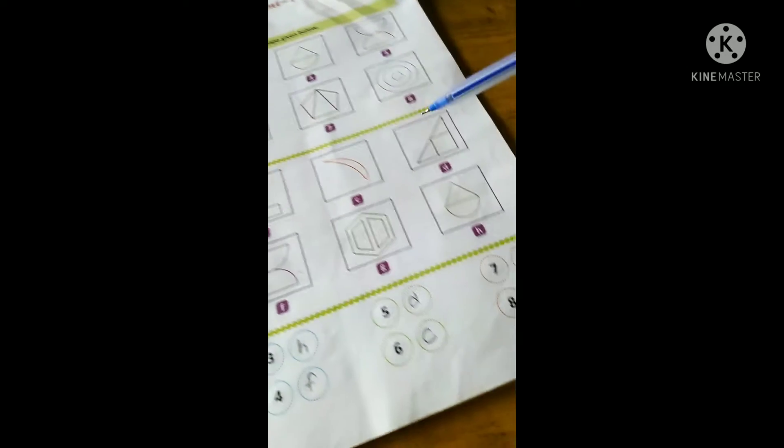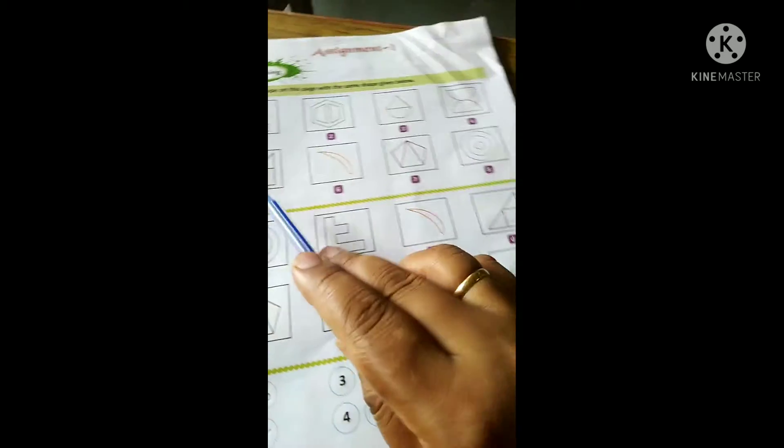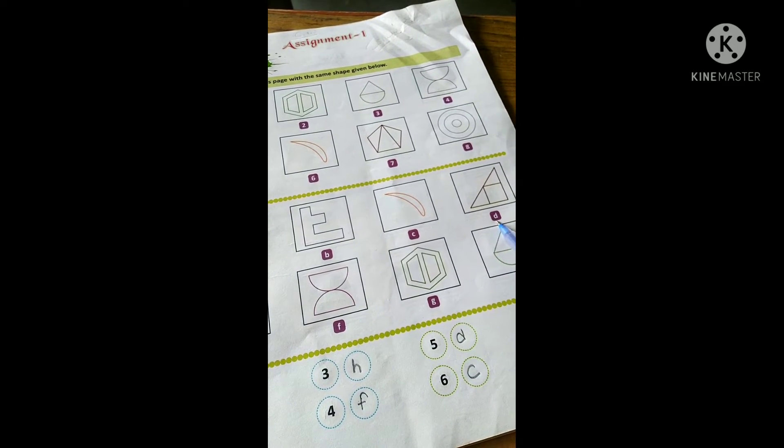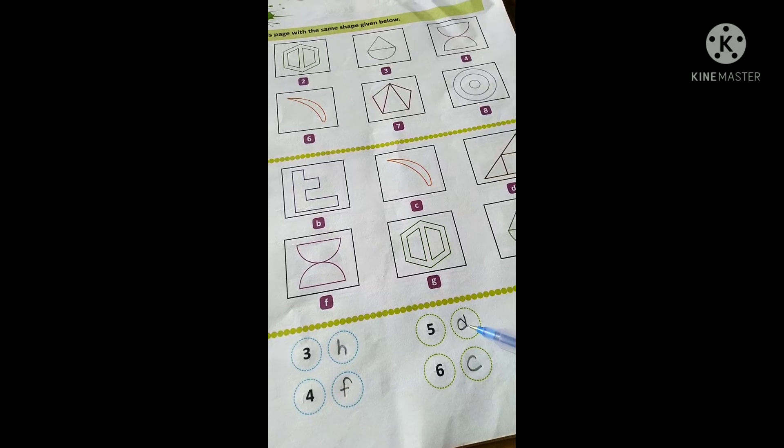This figure number is 5 and it matches with D. So in front of number 5, we will write D.